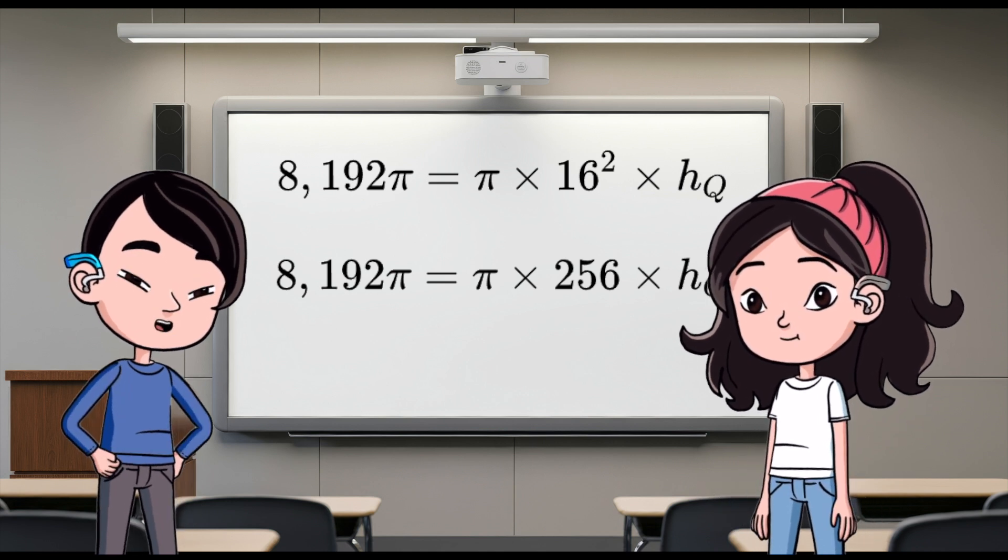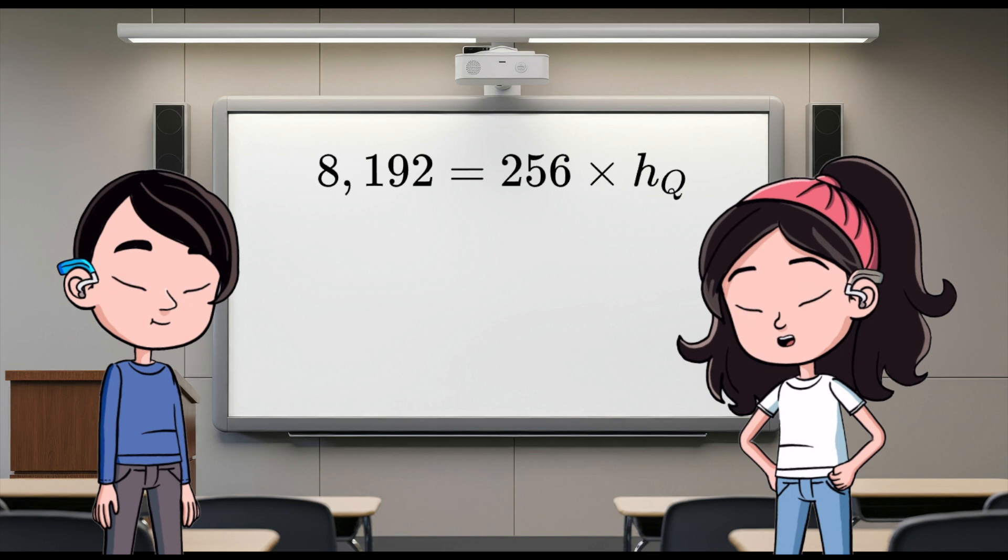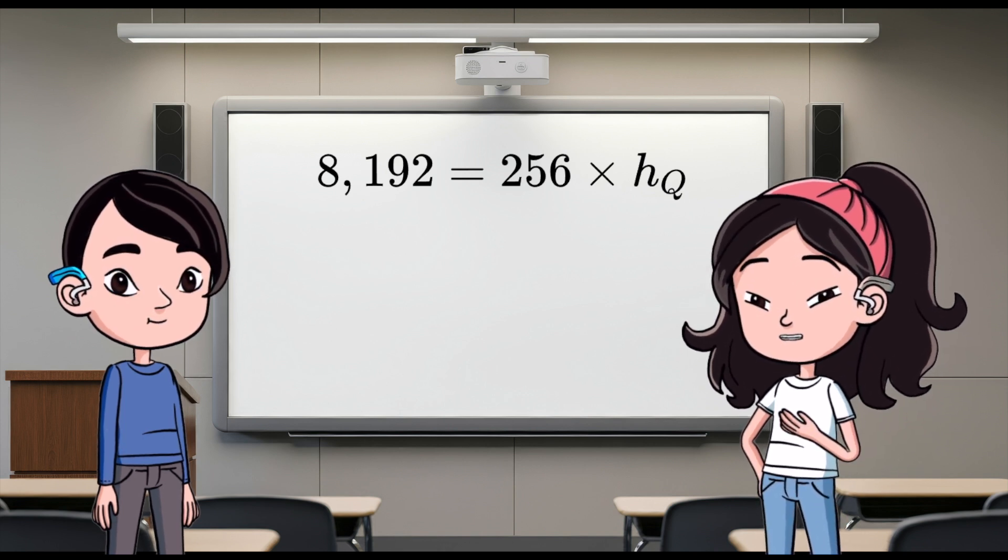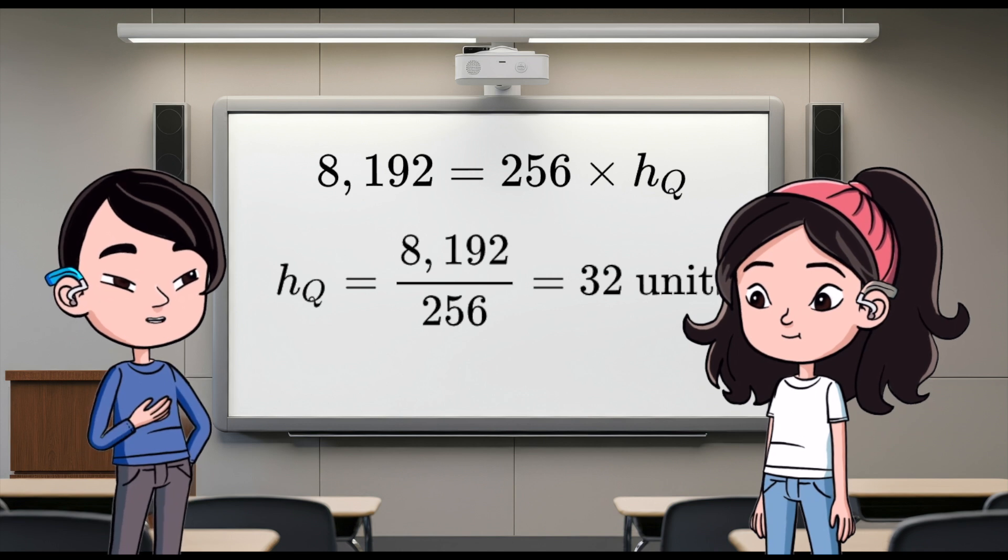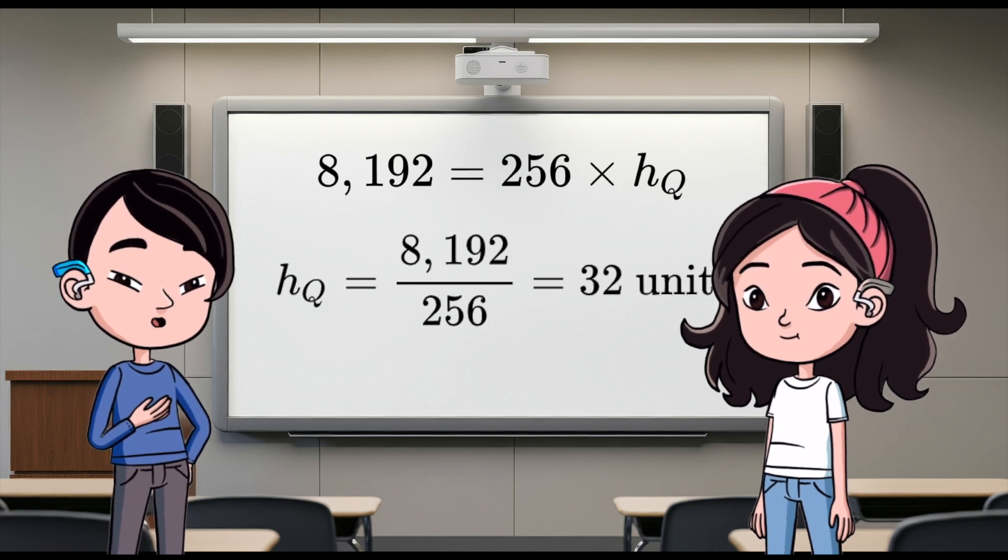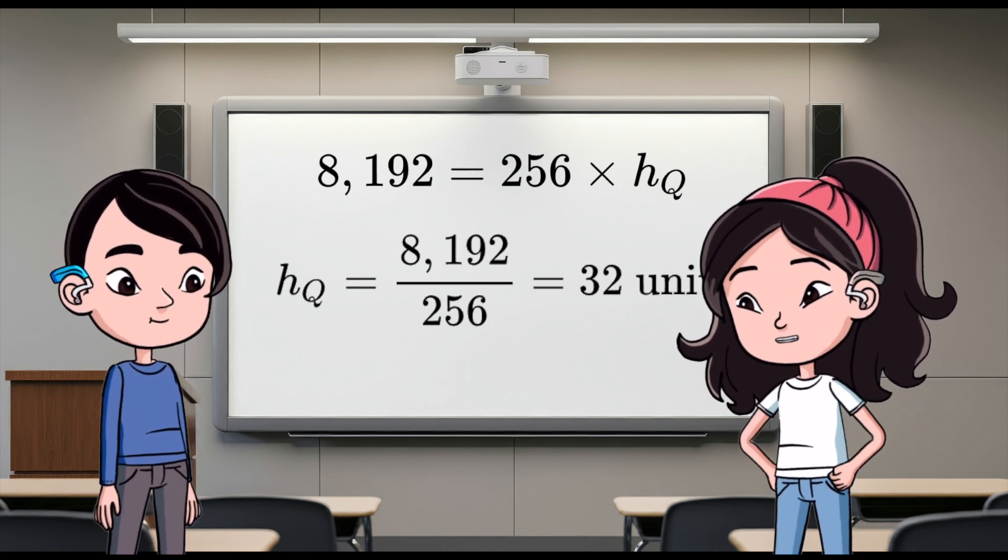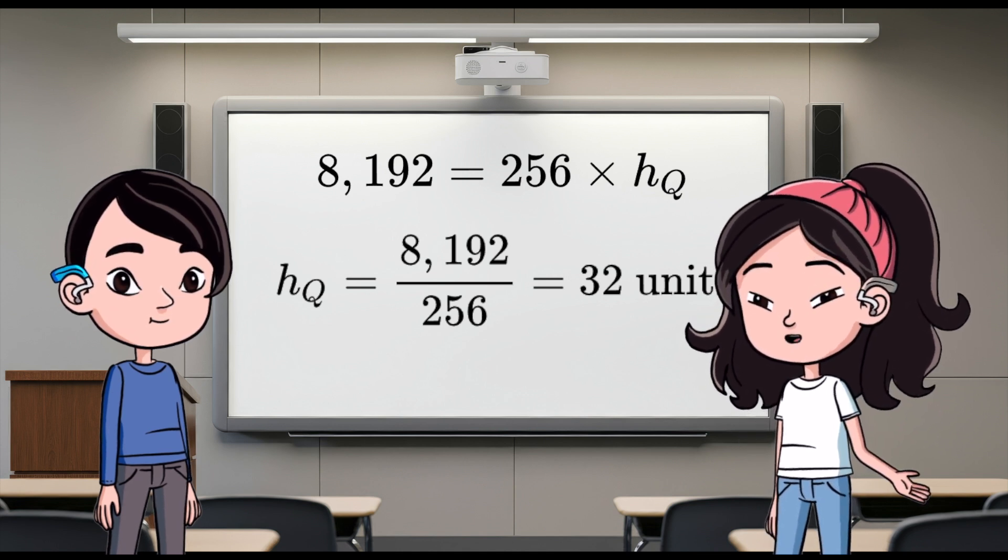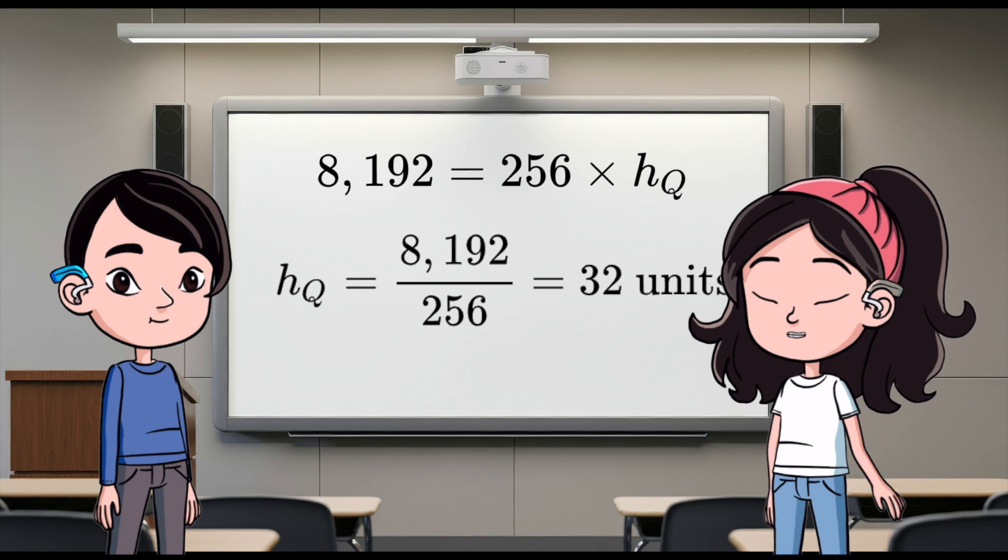Let's divide both sides by π. Right, that gives us 8,192 equals 256 times h sub Q. Then solve for h sub Q by dividing both sides by 256. So, h sub Q equals 8,192 divided by 256, which is, wait, 32 units.